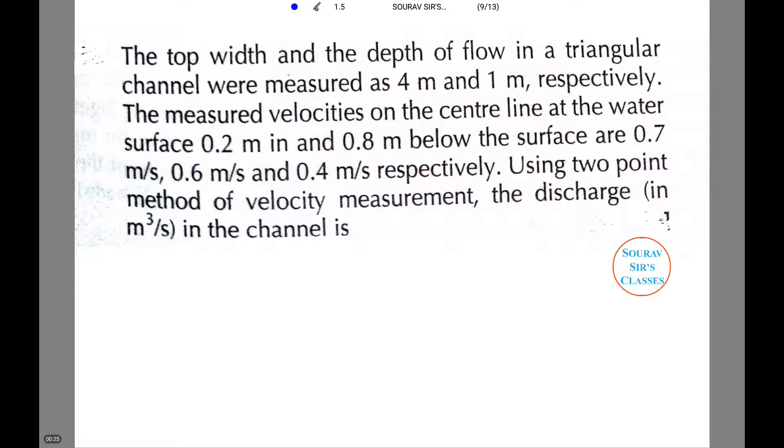Let us first read the question which we are about to solve in this particular tutorial. The top width and the depth of flow in a triangular channel were measured as 4 m and 1 m respectively. The measured velocities on the centerline at the water surface 0.2 m in and 0.8 m below the surface are 0.7 m/s, 0.6 m/s, and 0.4 m/s respectively. Using two-point method of velocity measurement, we need to find the discharge in the channel.